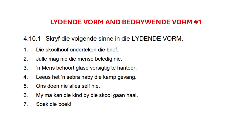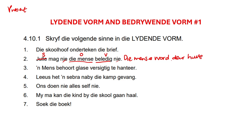Let's try the next one: 'Jelle mag nie die mense beledig nie.' What is the tense? Present tense. What is our stompie? Subject: Jelle. Verb: beledig. No time. Object: die mense. And we have the 'nie's' — it's in the negative. We start with the object: 'die mense.' Woord/is/sal — it's present tense, so 'woord'. Remember it's negative, so: 'die mense woord nie'. Then 'deur die subject' — 'deur hulle'. Remember the pronoun must change. We don't have place, so we skip that. Our verb is 'beledig' — it starts with 'be', so we don't put 'gebeledig', it's just 'beledig'. So: 'Die mense woord nie deur hulle beledig nie.' Full stop.